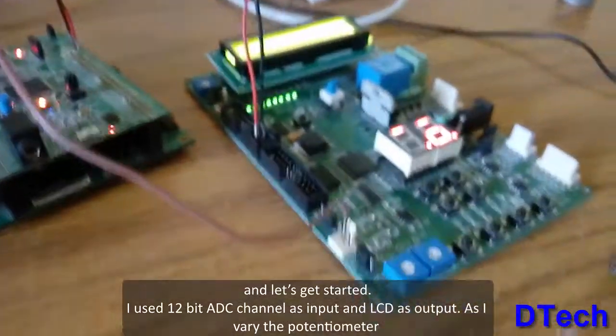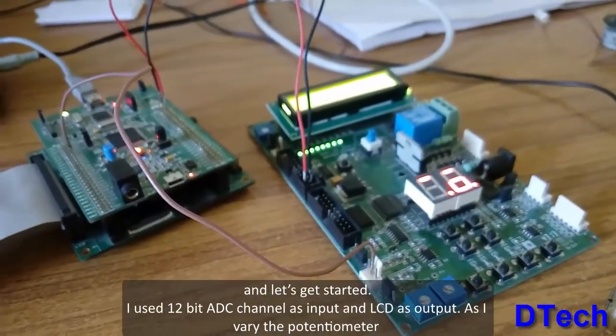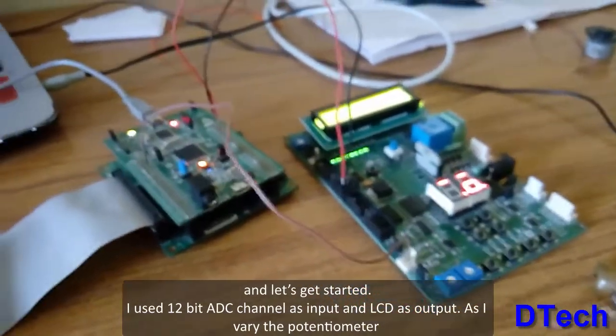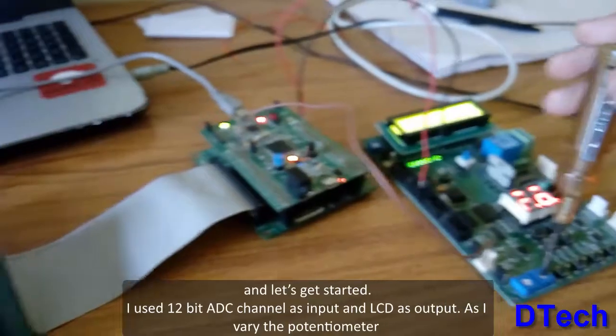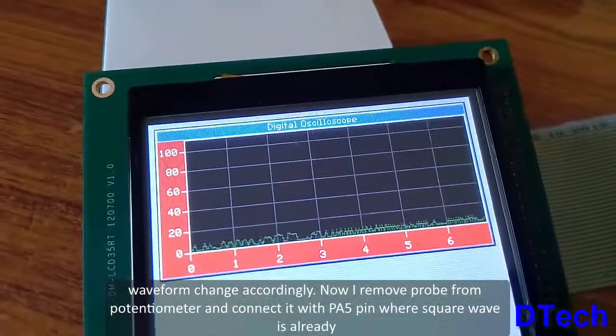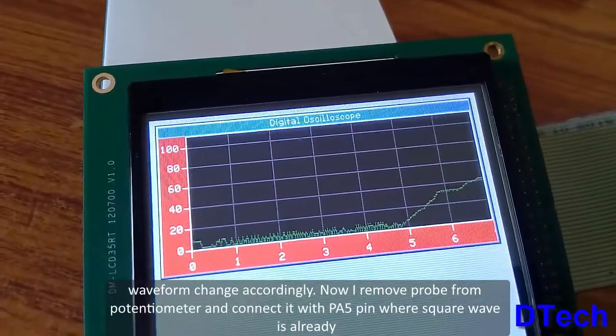I use a 12-bit ADC as input and LCD as output. Now, as I adjust the potentiometer, you can see that the waveform changes accordingly.